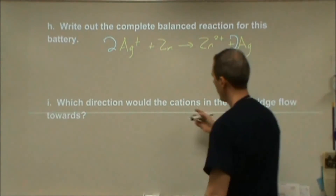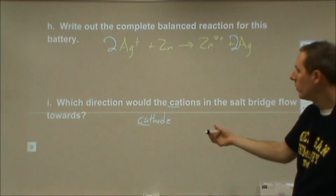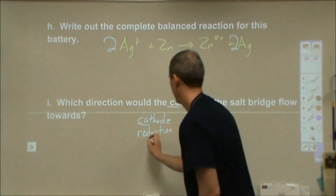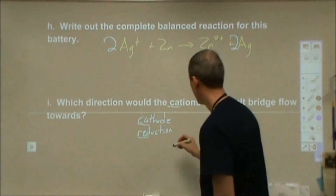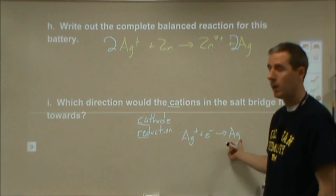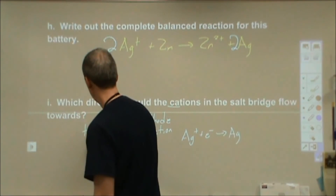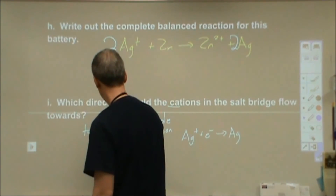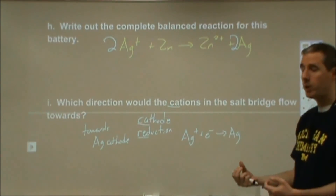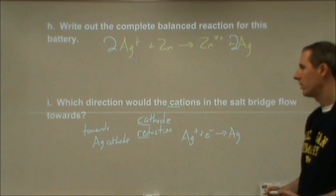Which direction would the cations in the salt bridge flow? Cations always flow toward the cathode. The cathode is where reduction occurs. What's being reduced here is the silver ions being reduced to silver metal at the silver electrode. So cations from the salt bridge flow toward the silver cathode. This keeps charge balanced because electrons are flowing in — the cations compensate so the overall charge stays neutral and the battery doesn't shut down.